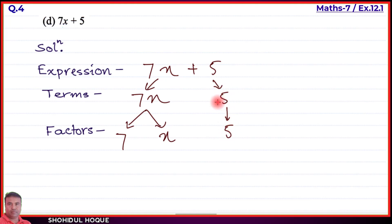The second term is 5, which is a prime number, so it has only one factor: 5. This completes the tree method for part (d). Next is part (e).